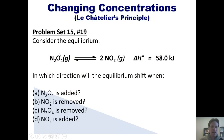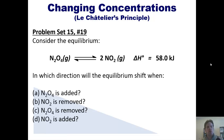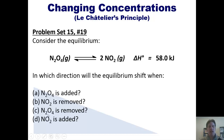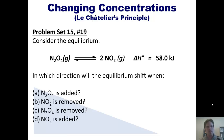I want you to consider the equilibrium shown here between N2O4 and NO2. I want you to answer each of the following questions: in which direction will the equilibrium shift if N2O4 is added, if NO2 is removed, if N2O4 is removed, and if NO2 is added? If you wish, you can pause the video here and think about this, then hit play and I will explain the answers to each of these.